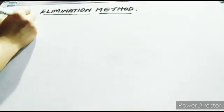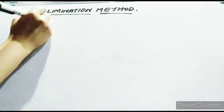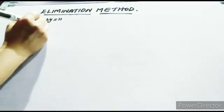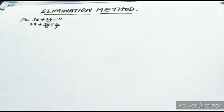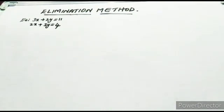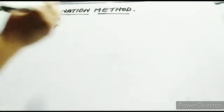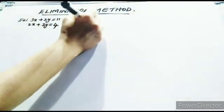Let us solve some example problems. Our first example is: 3x plus 2y is equal to 11, and 2x plus 3y is equal to 4. This is our example problem. Whatever equation you are given must satisfy the condition of a pair of linear equations, meaning the equation must be in the form of Ax plus By plus C is equal to 0.